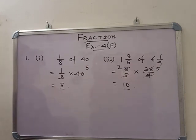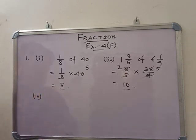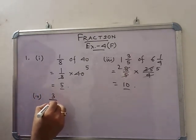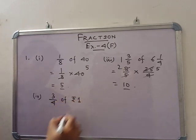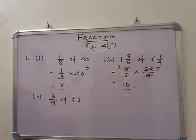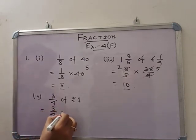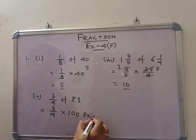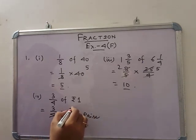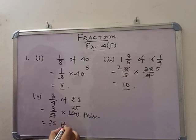In number 4: 3 by 4 of Rupees 1. Rupees 1 means 100 paise. So we can write 3 by 4 into 100 paise. This is 25, so 75 paise.